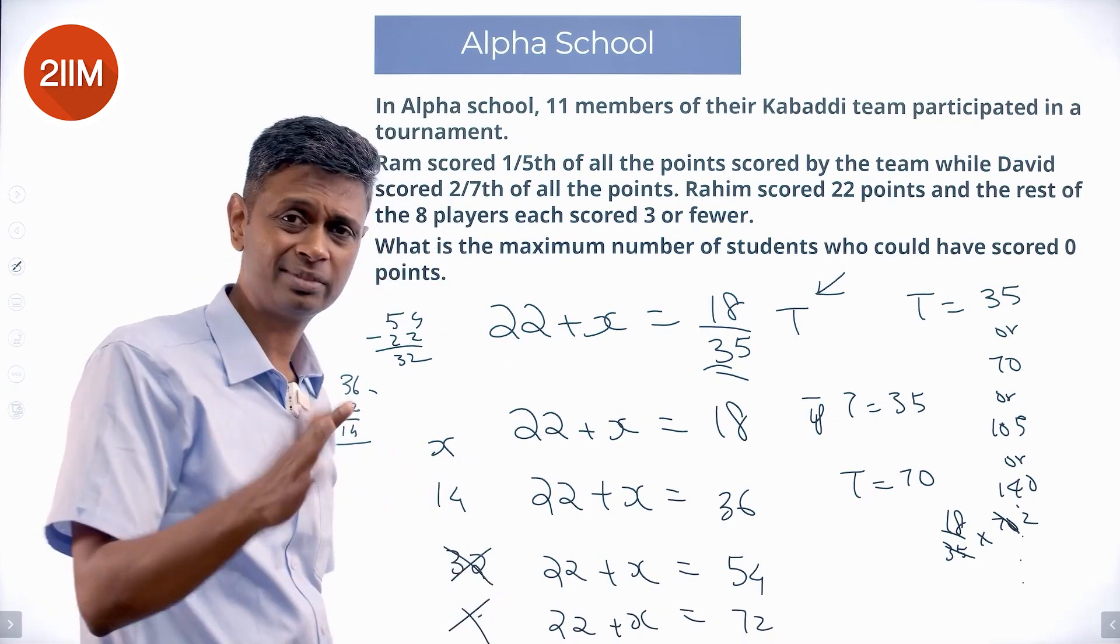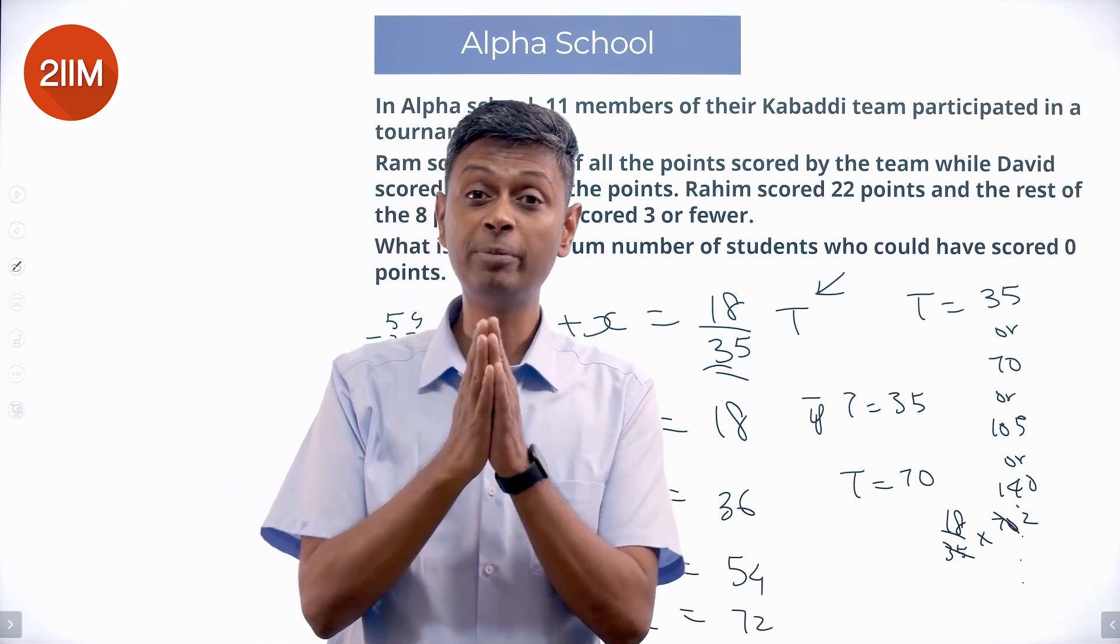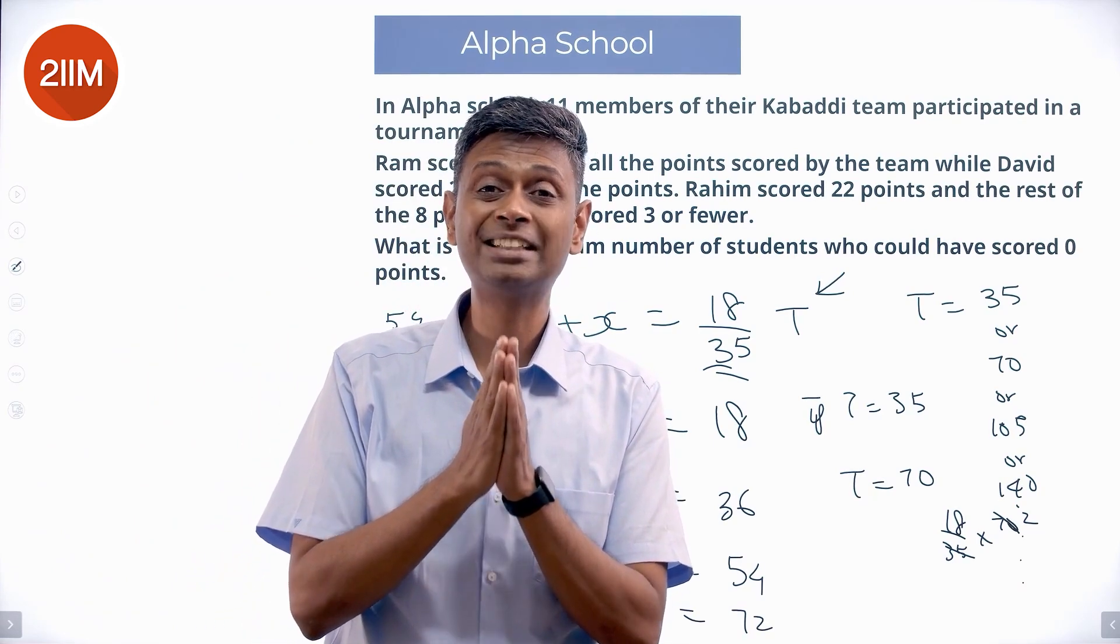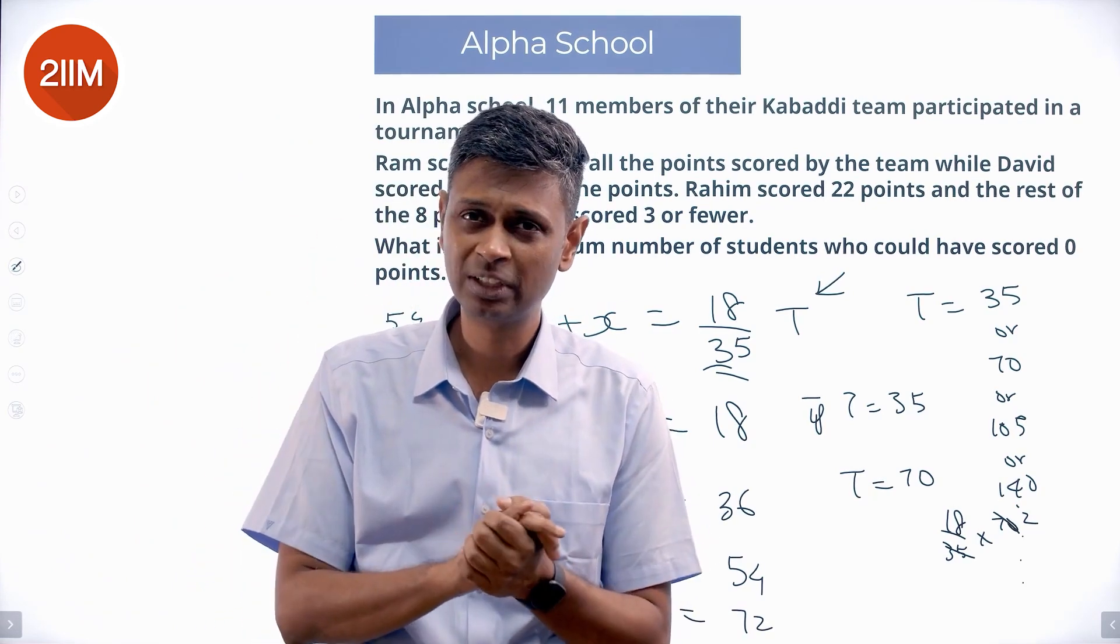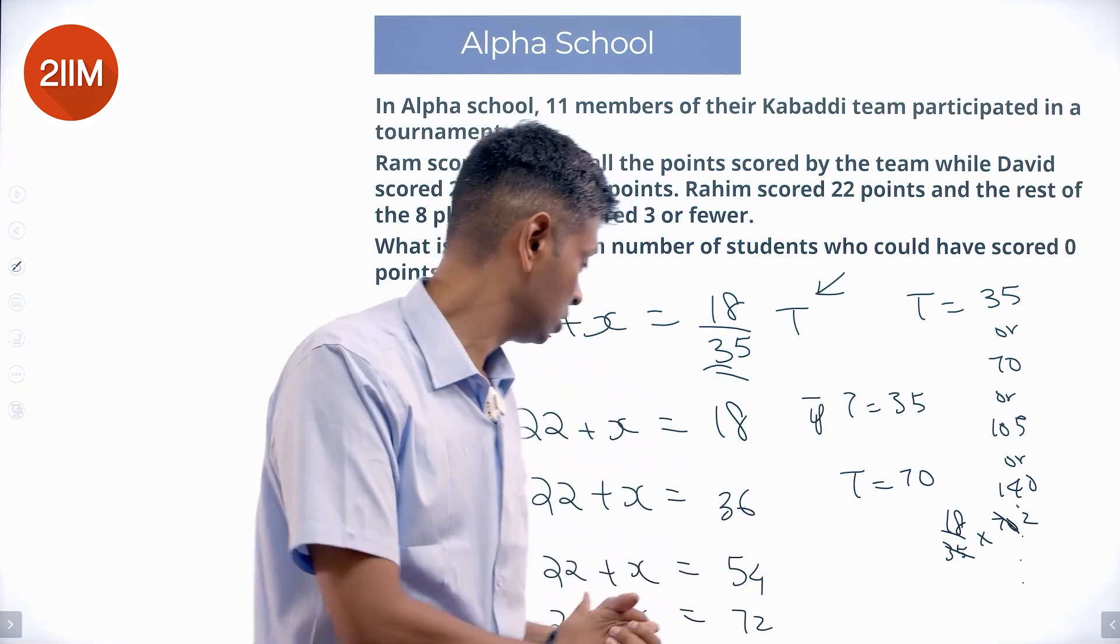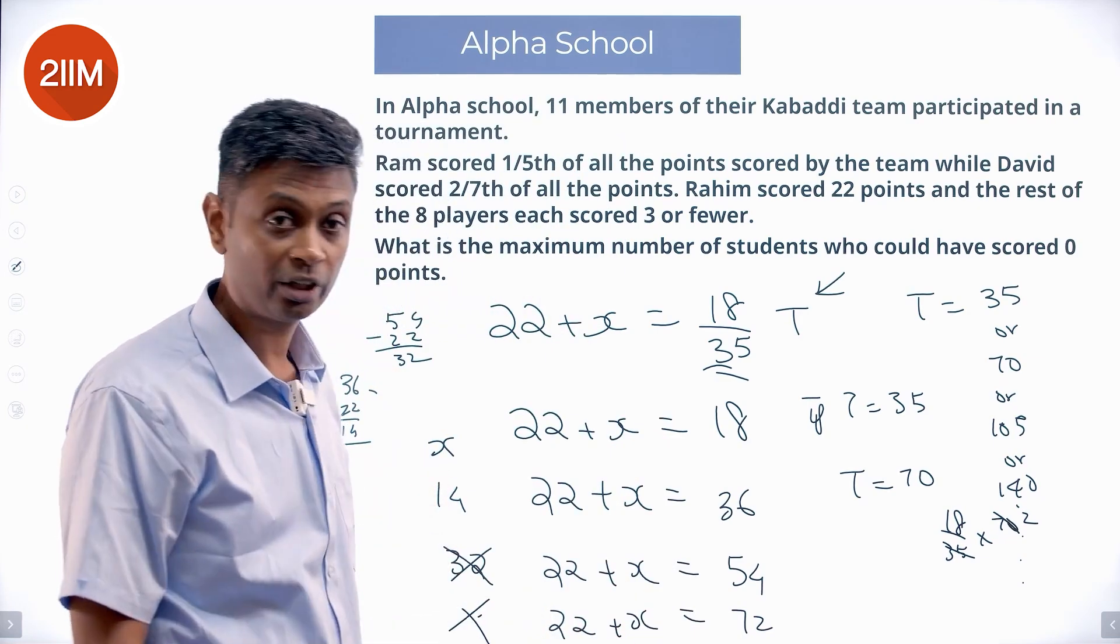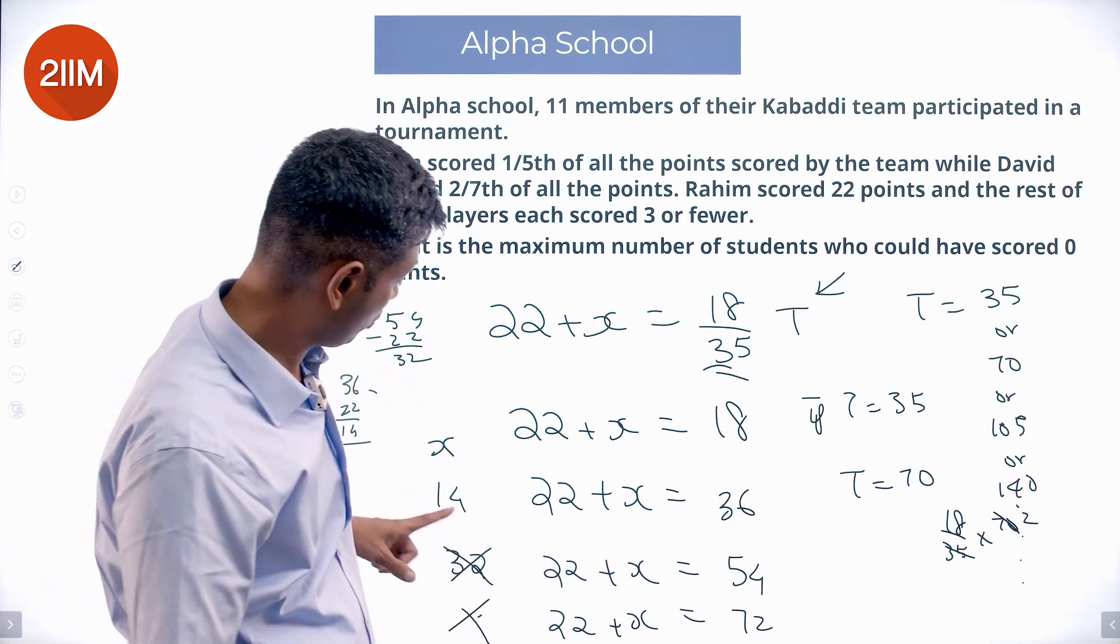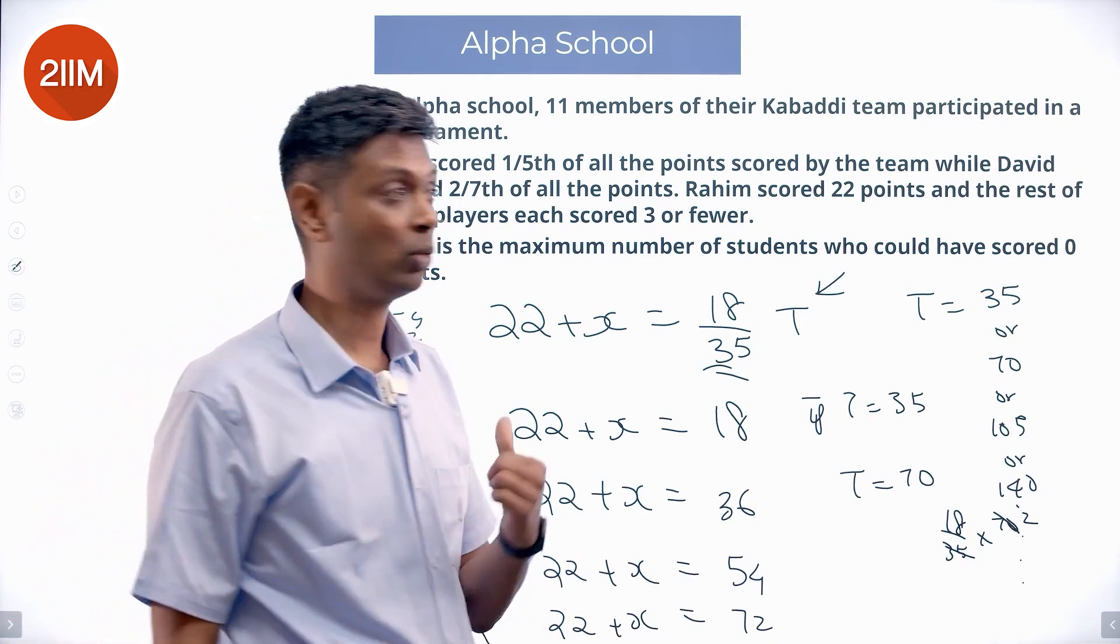It cannot be 32. It cannot be the next number. None of that is possible. All of these fellows, 8 people put together can score a maximum of only 24 points. They could not have scored 32 points or even more than 32. Of these 8 people put together, should have scored exactly 14 points. Now, we are through.